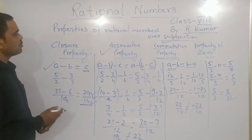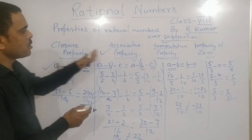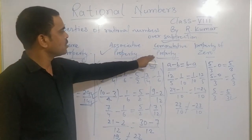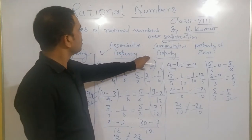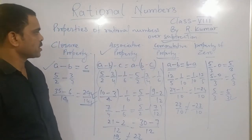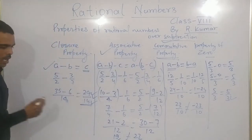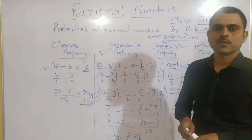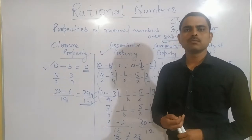So, in this way, we have seen 4 different properties. 2 properties out of which do not satisfy for subtraction. Now, after this, I am giving you 3 questions. You do at home.